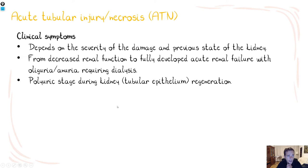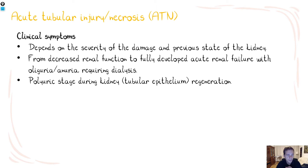The clinical symptoms of ATN can be quite variable because they depend on the severity of the damage and the previous state of the kidney. You can see various levels of decreased renal function. At the end of the spectrum is fully developed acute renal failure with oliguria or anuria requiring dialysis. As the kidney starts to heal in the regeneration phase, a polyuretic stage can be appreciated, because the tubular epithelium during regeneration tends to lose solutes and fluids. Patients lose large amounts of fluid via urine.